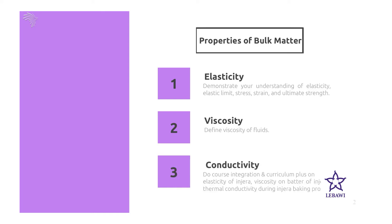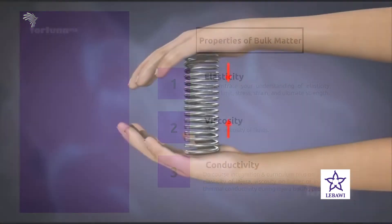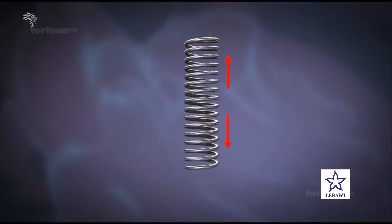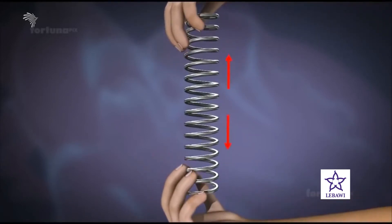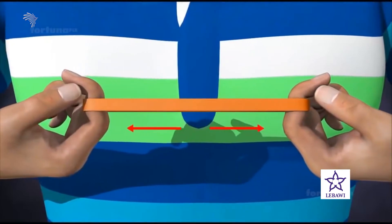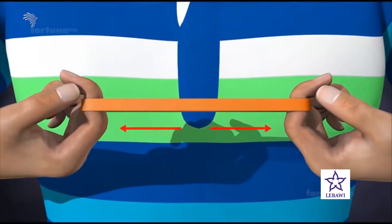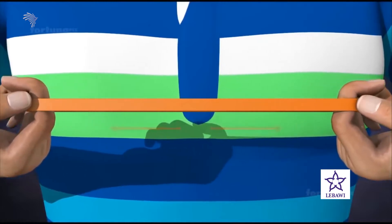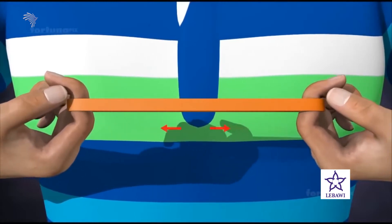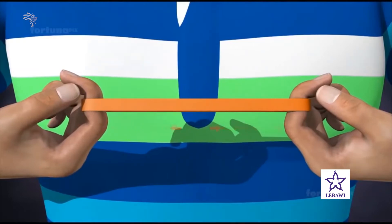Let's start from the first one, which is elasticity. We have different materials, and we can categorize these materials as elastic and plastic. Elasticity is defined as the ability to regain its original configuration after the removal of the deforming force. For instance, if you take a rubber band, you can stretch it until it reaches its elastic limit, and when you release it, it will come back to its original position or configuration.